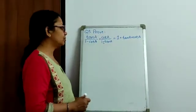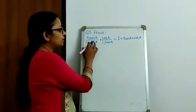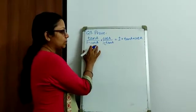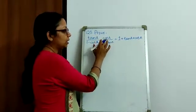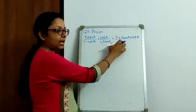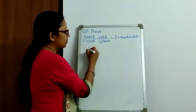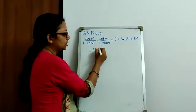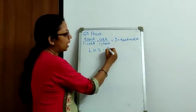Hello, the question for today is to prove tan A by 1 minus cot A plus cot A by 1 minus tan A is equal to 1 plus tan A plus cot A. That is, we have to show LHS is equal to RHS.